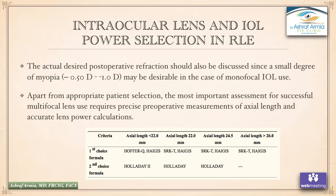When selecting IOL power for refractive lens exchange, the actual desired postoperative refraction should be discussed, since a small degree of myopia (minus 0.5 to minus 1) may be desirable with monofocal IOLs when used without reading glasses. The most important assessment for successful multifocal lens use requires precise preoperative measurements of axial length and accurate lens power calculation. First choice formulas: Hofer, Haigis, SRK/Haigis, or SRK/T for axial length 22–24.5mm, and SRK/T or Haigis for axial length greater than 26mm. Second choice: Holladay 2 for less than 22mm, Holladay for 22mm, and Holladay for greater than 24mm.